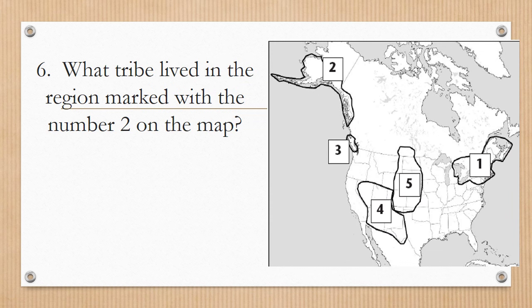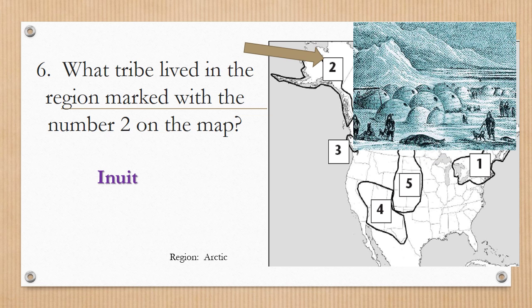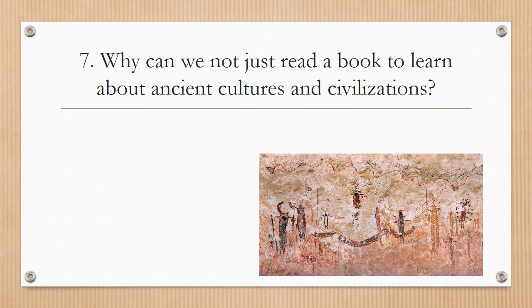Number six: what tribe lived in the region marked with the number two on the map? Did you say the Inuit? If so, you are correct. The Inuit people lived in the Arctic region up at the Arctic Circle — very cold in that region, as you can see. The Inuit are the ones who lived in igloos.